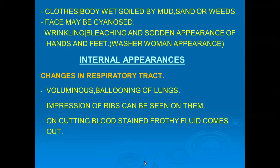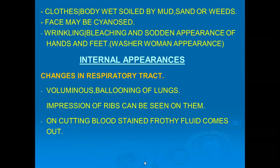Internal findings in death due to drowning: typical findings are in the respiratory tract. The lungs are large and voluminous — ballooning of the lungs. They are so much enlarged that you can observe the impression of ribs on the surface of the lungs. If you cut these lungs, blood-stained froth will come out. These are typical findings of wet drowning in the lungs.